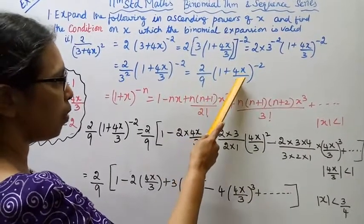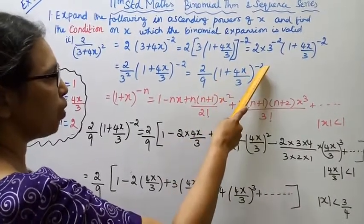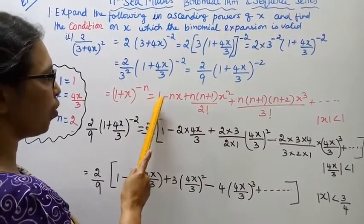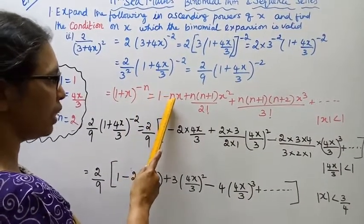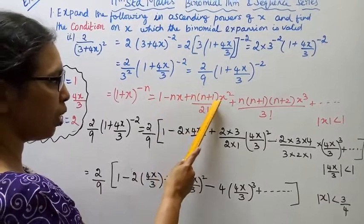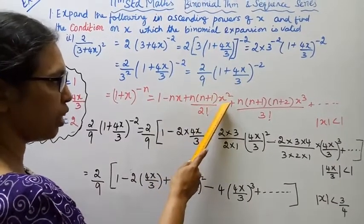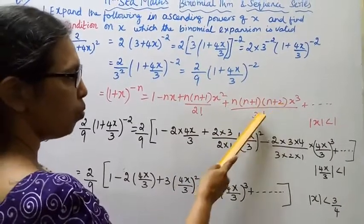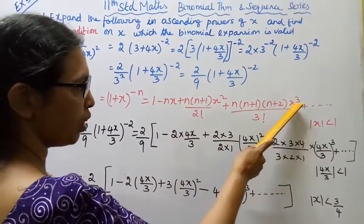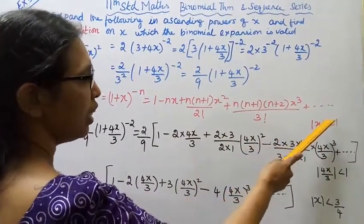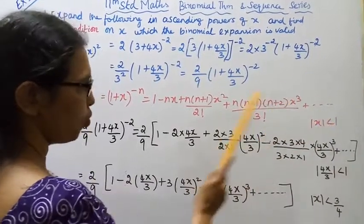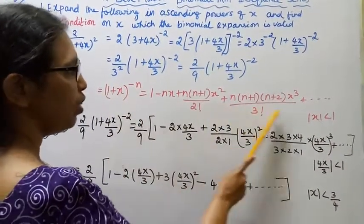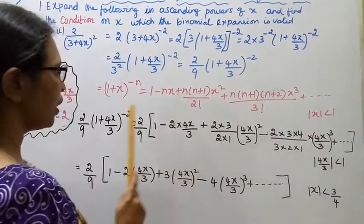The formula for (1+x)^(-n) is: 1 − nx + n(n+1)/2! × x² − n(n+1)(n+2)/3! × x³ + etc. The condition is mod x less than 1. We will use this formula to expand (1 + 4x/3)^(-2).